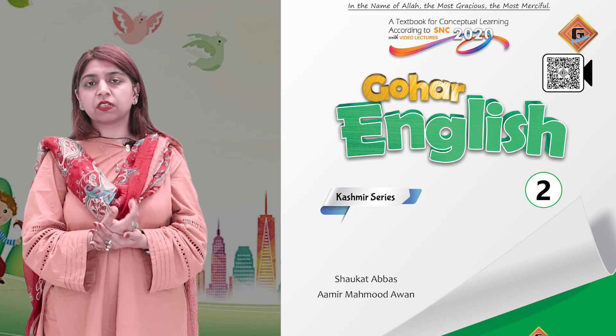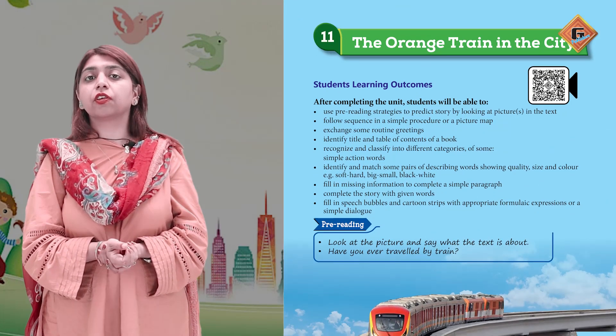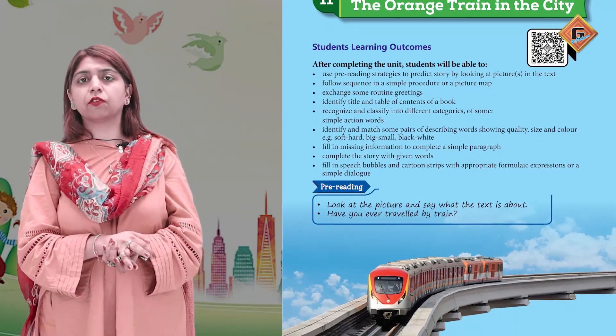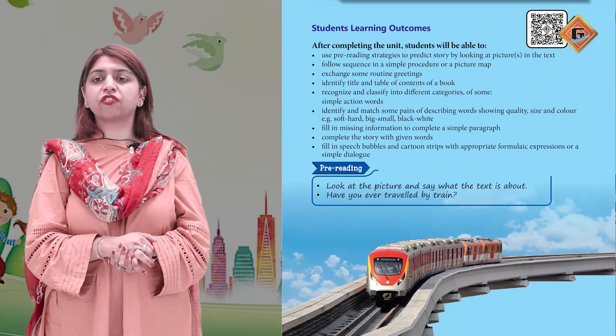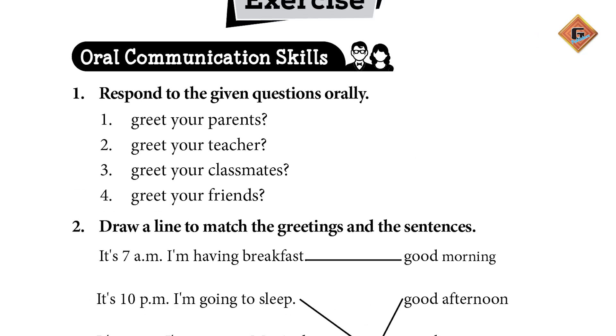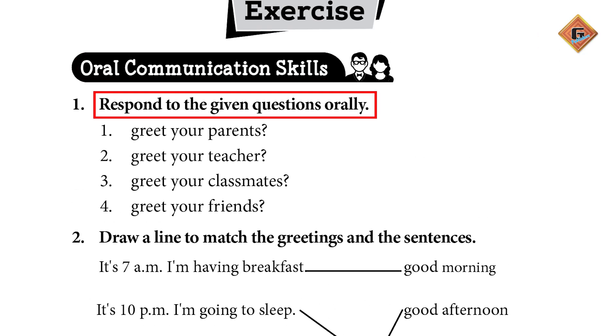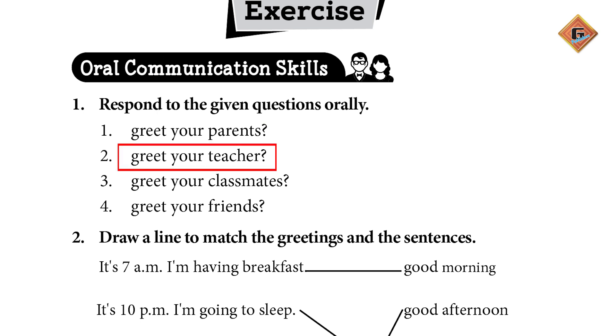Gohar English for Grade 2 ka unit number 11, and the title of the unit is 'The Orange Train in the City'. Ab dekhte hain exercise: oral communication skills — response to the given situations orally.